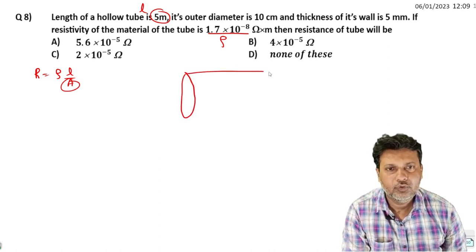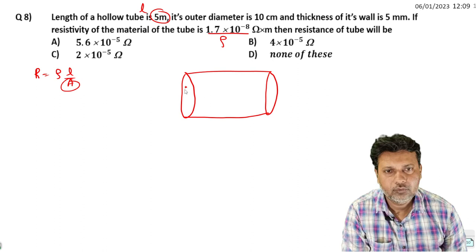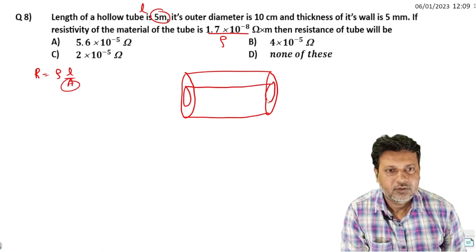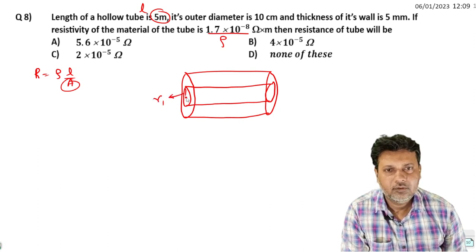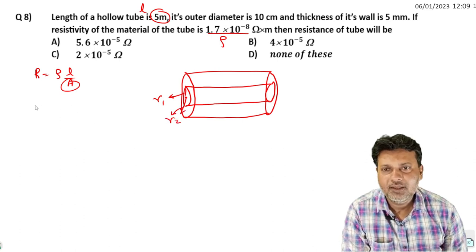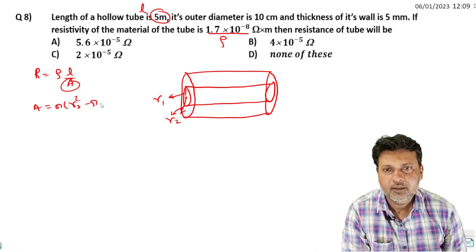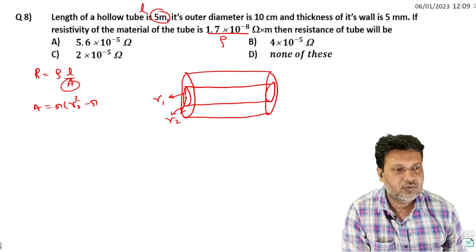L is given. For a hollow tube, the inner and outer diameters are different. The area you need to calculate is pi times r2 squared minus pi times r1 squared.